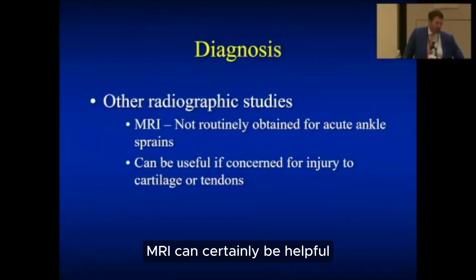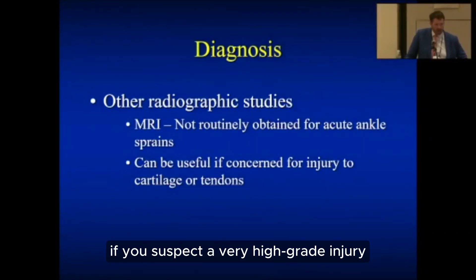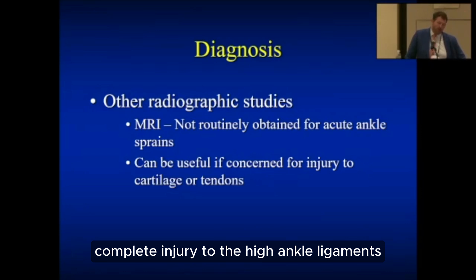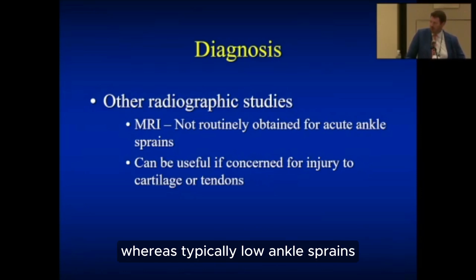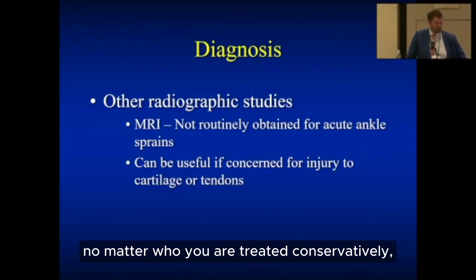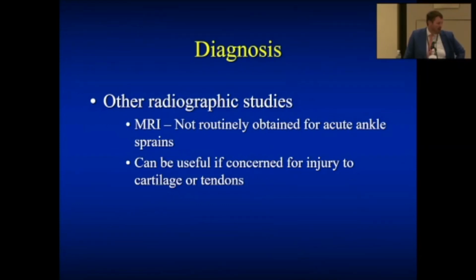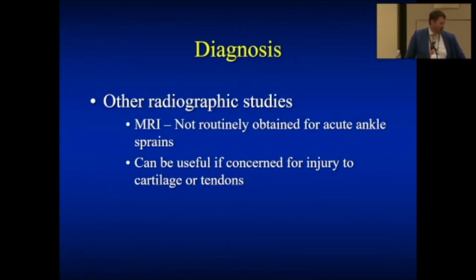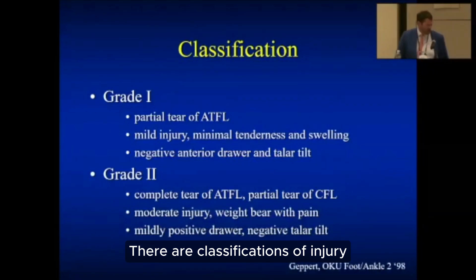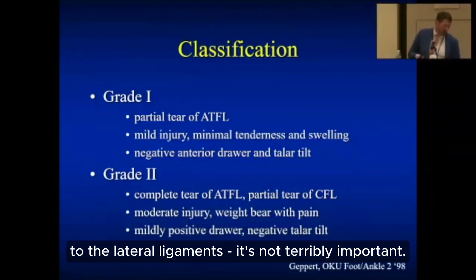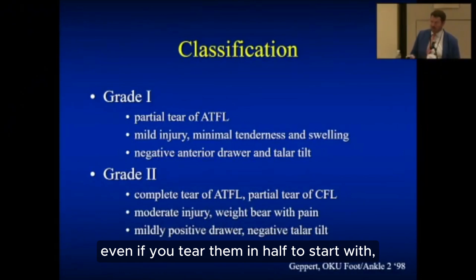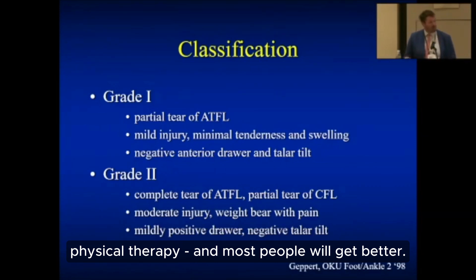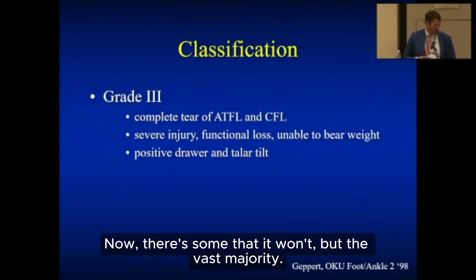MRI can be helpful if you suspect a high-grade injury, especially to the high ankle ligaments. An acute complete injury to the high ankle ligaments is typically treated surgically, whereas low ankle sprains are treated conservatively because most will improve. There are classifications of lateral ligament injury, but the main point is: even if you tear them completely, you still start with conservative management — bracing and physical therapy — and the vast majority of people will get better.